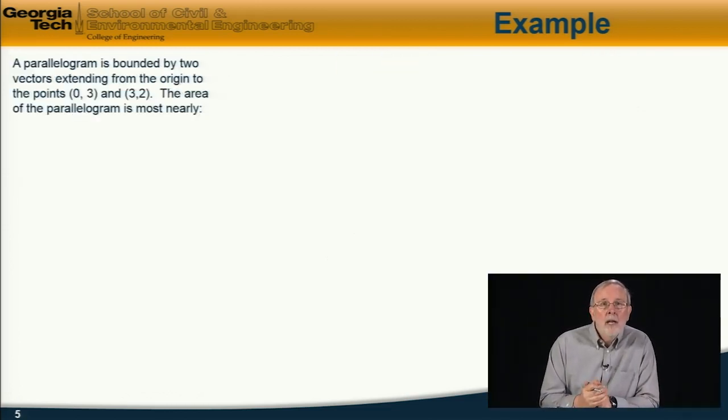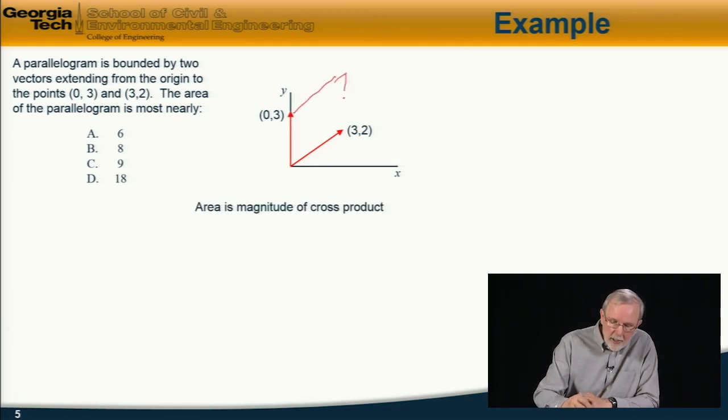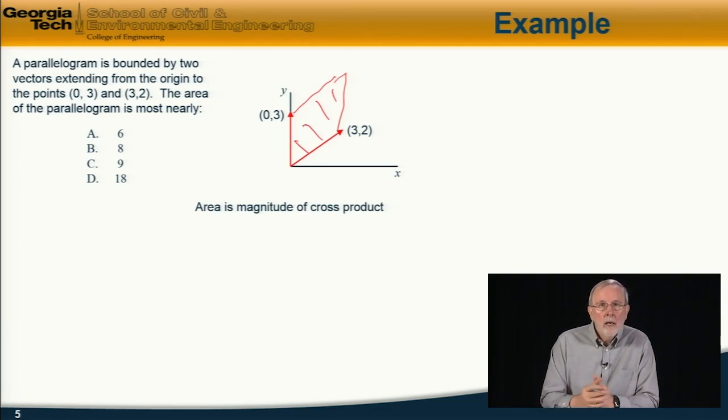Last example, we have a parallelogram which is bounded by two vectors which extend from the origin to the points 0,3 and 3,2. The area of the parallelogram that's formed by those two vectors is most nearly which of these alternatives. So here's the situation. Here are the two vectors extending from the origin to 0,3 and 3,2. And the question is to find the area of the parallelogram. In other words, this area right here. And obviously, there are a number of ways to do this. But in this case, the easy way to do it is by forming the magnitude of the cross product between those two vectors. Because you remember that the cross product is just the area of the parallelogram formed by the two vectors.